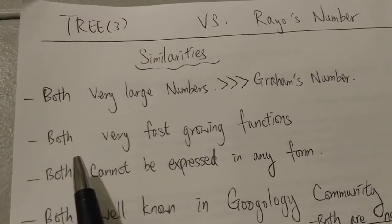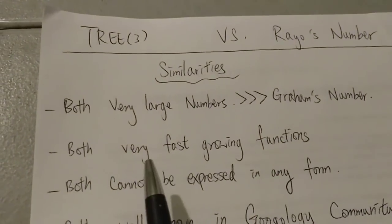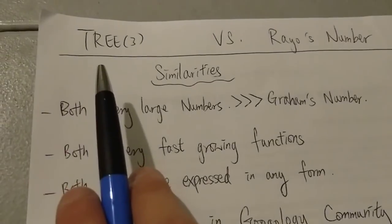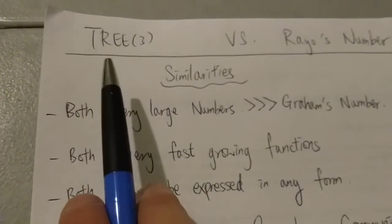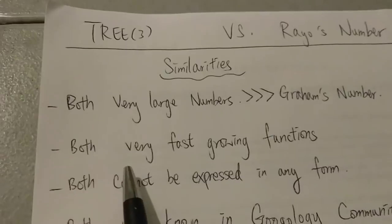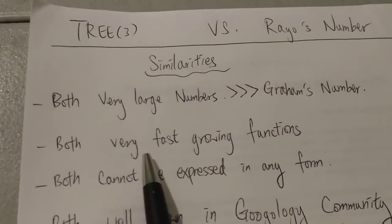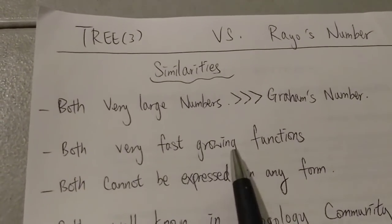And both TREE(3) and Rayo's number—I mean the functions they came from—so the tree sequence and the Rayo's function are both extremely fast-growing functions.